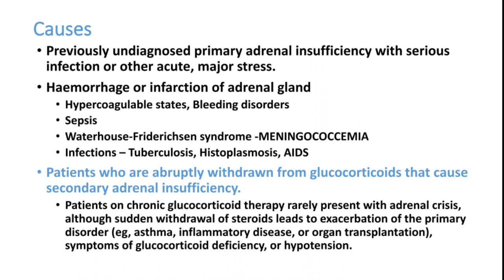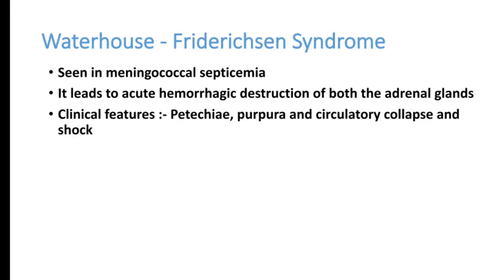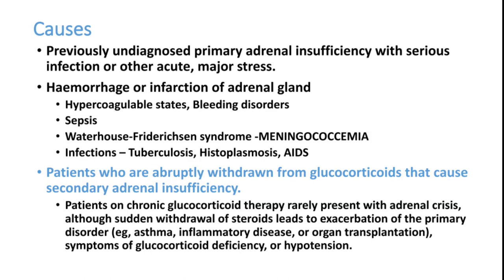Waterhouse-Friderichsen syndrome is mainly seen in meningococcemia. The patient presents with high-grade fever, features of meningitis, generalized rashes all over the body, and hypotension. It represents adrenal insufficiency as part of meningococcemia with adrenal hemorrhage or bleed, leading to acute adrenal failure.